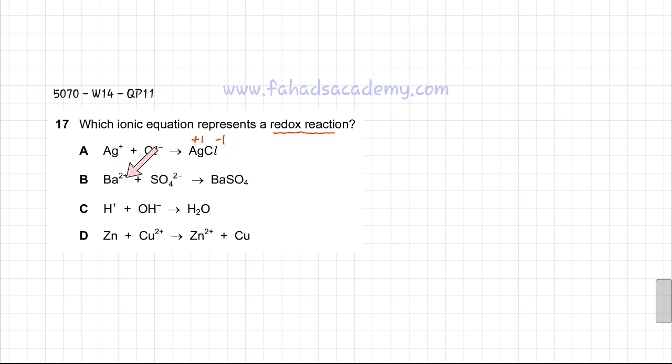If you look at the second option, Ba is 2+, SO4 is 2-, they get together to form BaSO4, which is insoluble. But Ba is still 2+ and SO4 is still 2- in this ionic compound as well.